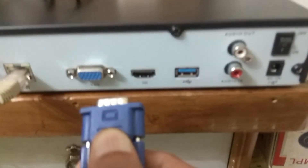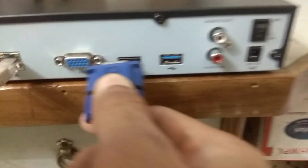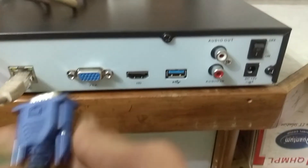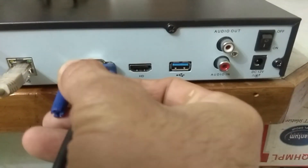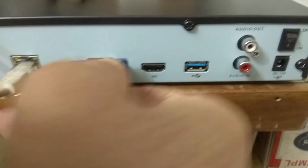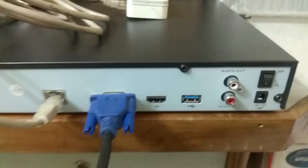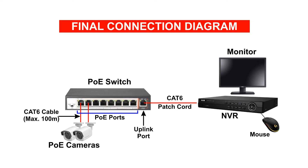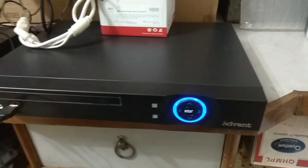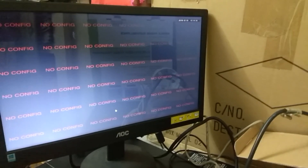Finally, connect the monitor and the mouse to the NVR. You can use a monitor with an HDMI input port or a monitor with a VGA input port — interfaces for both types are usually provided on the NVR. The mouse is connected to the USB port. We are now ready with all our connections. The final connection diagram is shown on screen for your convenience. Let's turn on the power to our NVR, PoE switch, and monitor.